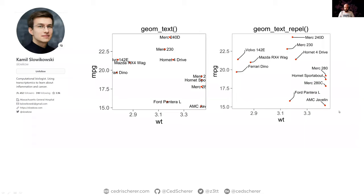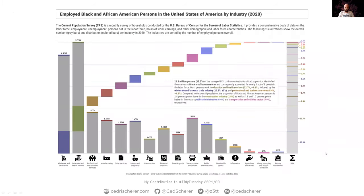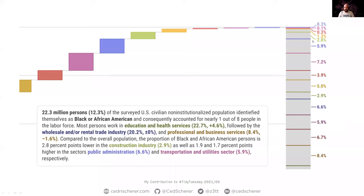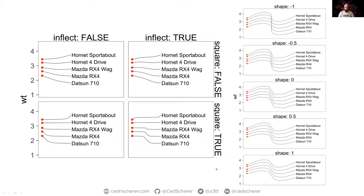A newer addition to ggrepel is more fancy segment types — curved connectors rather than straight lines. I used this for a summary bar where labels were too close together, and found the aesthetics very pleasing. It shows labels in the right order without overplotting, with small branching lines indicating that multiple segments all fall below one percent. There are many arguments to explore: an inflect argument, a square argument, a shape argument, and many more.